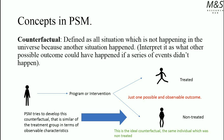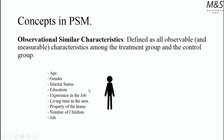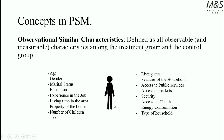Another important concept is observational similar characteristics, defined as all observable and measurable characteristics among the treatment group and the control group. An individual has characteristics such as age, gender, marital status, educational level, job experience and abilities, living time in the area, number of children, and type of job. Observable characteristics can also include features of the household, access to public services, access to markets, security, access to health, energy consumption, type of household, and income. Propensity score matching, based on these observable characteristics, estimates a comparison group as a statistical construction.